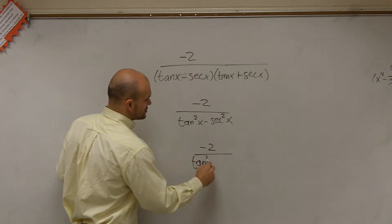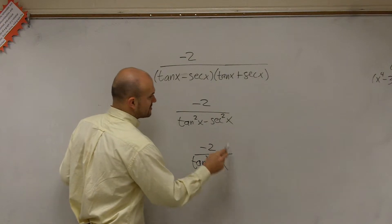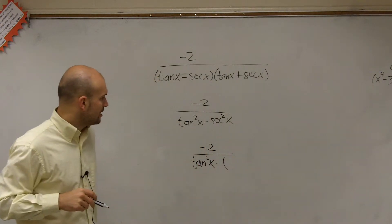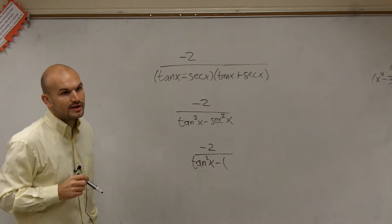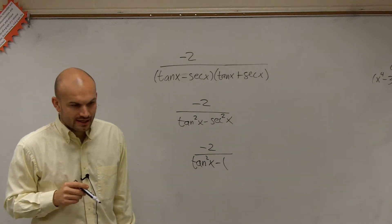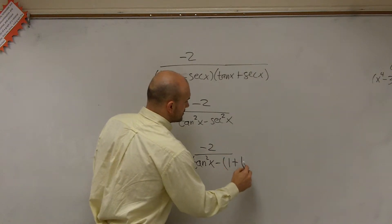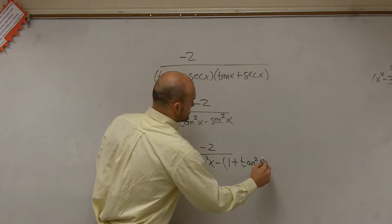Therefore, I'll have tangent squared of x minus, now, secant squared, if you remember, is going to be, well, it's tangent squared plus 1 equals secant squared. So secant would be 1 plus tangent squared of x.